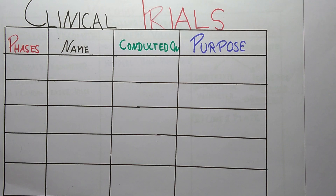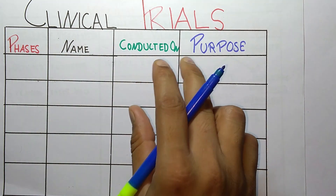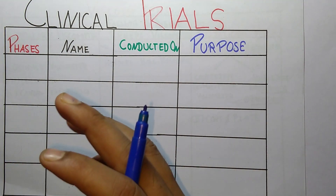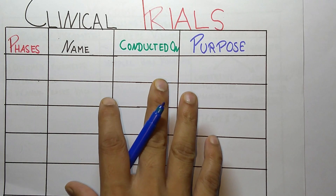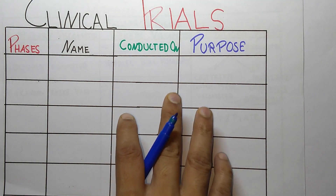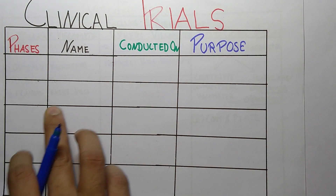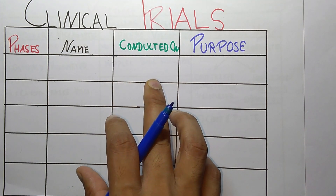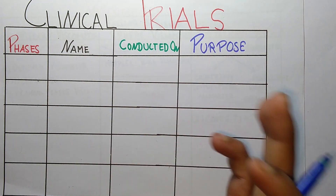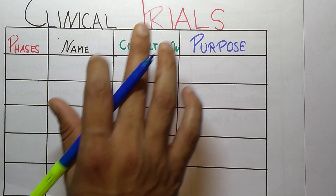Hello students, welcome to the channel Pharma4U. In today's video we are going to discuss clinical trials. We are discussing this because in 2017 and 2018 questions were asked from this table — such as which is phase three, what is the name of phase three, or how many patients are included in phase one or phase two. We are going to discuss the phases, their names, what they are conducted on, and their purpose.